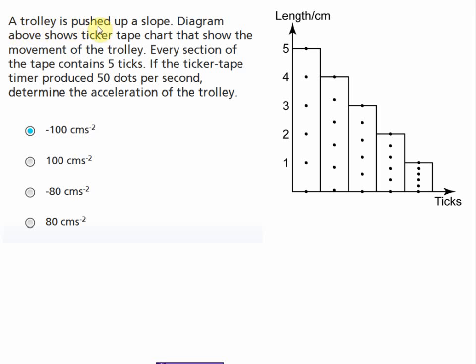A trolley is pushed up a slope. The diagram above shows a ticker tape chart that shows the movement of the trolley. Every section of the tape contains five ticks. If the ticker tape timer produces 50 dots per second, determine the acceleration of the trolley.